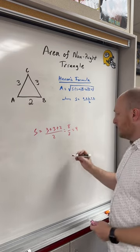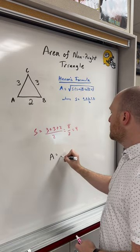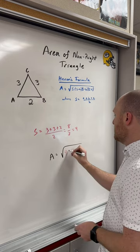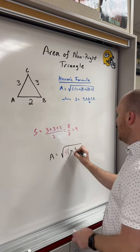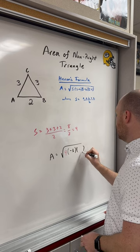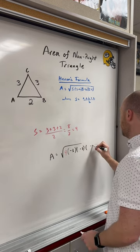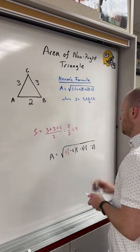Now we can plug it into Heron's formula. Area is equal to the square root of S times S minus A, which is 3, times S minus B, which is 3, times S minus C, which is 2.